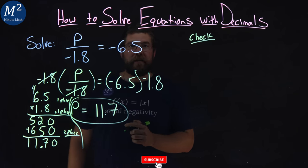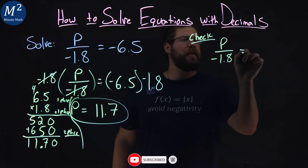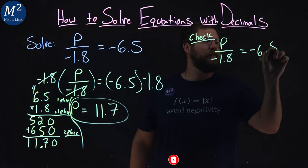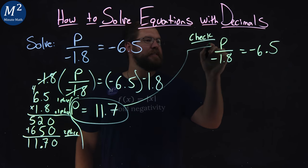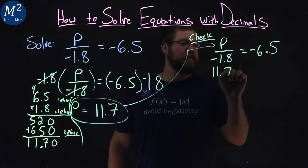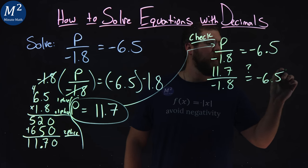Alright, so now let's go check that. We rewrite our equation. p over negative 1.8 equals negative 6.5. If I can write the fives. We're going to plug in 11.7 in for p. 11.7 over negative 1.8. Is that equal to negative 6.5?